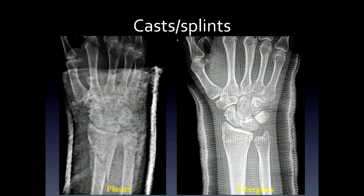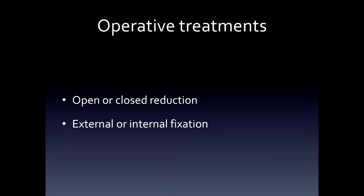I know that you're used to looking at patients who are in casts and splints — plaster is shown on the left and fiberglass on the right. But today we're going to talk mostly about operative treatments, including external fixation and internal fixation.